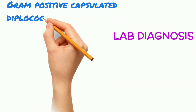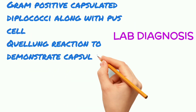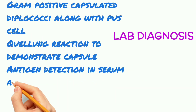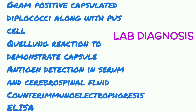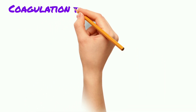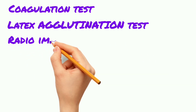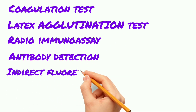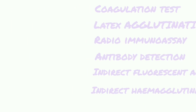Now let's start with the lab diagnosis. Gram-positive capsulated diplococci are seen along with pus cells. The Quellung reaction is used to demonstrate the capsule. For antigen detection in serum and cerebrospinal fluid: counter immunoelectrophoresis, ELISA, coagglutination test, and latex agglutination test. For antibody detection: radioimmunoassay, indirect fluorescent antibody techniques, and indirect hemagglutination.